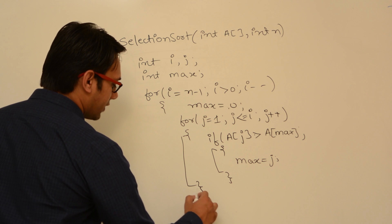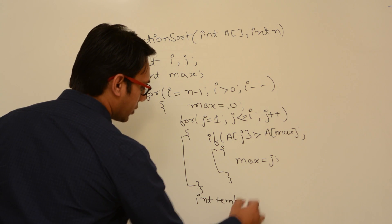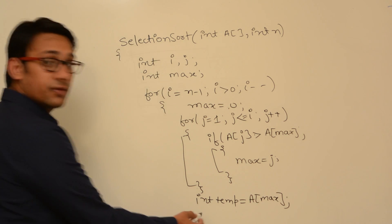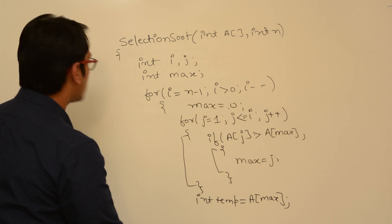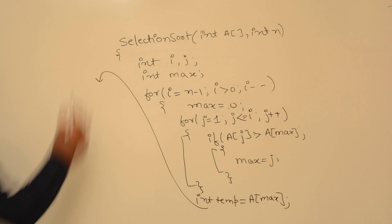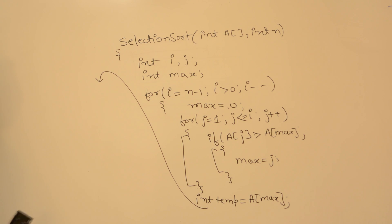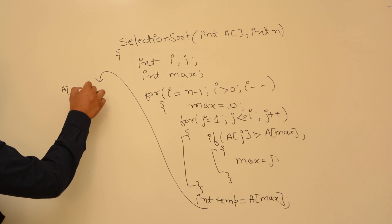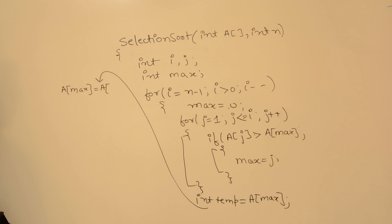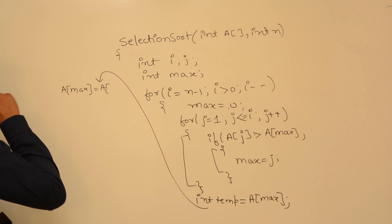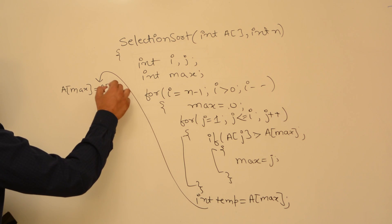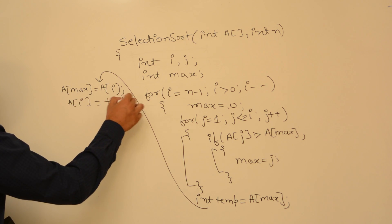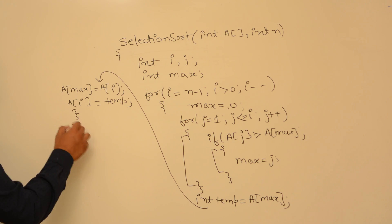The swap is: int temp equal to a of max. Then a of max equal to a of i. And then a of i equal to temp. Then we come out of the outer loop. Let us see what is happening here with an example array.